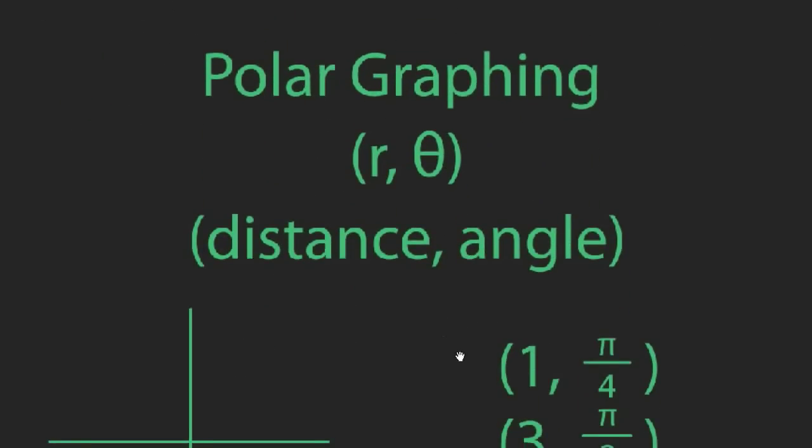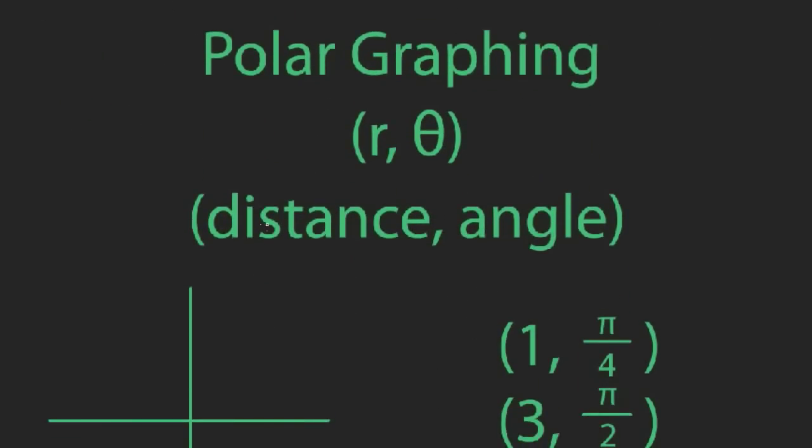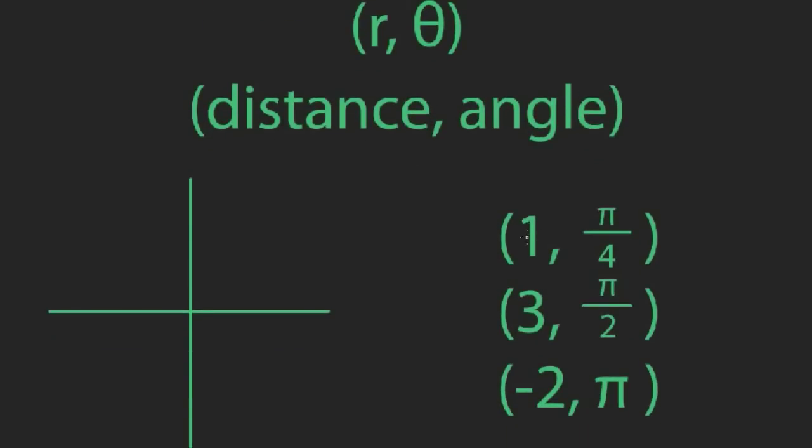Polar graphing is a little bit more radical than parametric graphing. Now we have totally new variables. So now we're going to graph the points with the coordinate system r, θ. What this means: r is your distance from the origin and θ is the angle that you make with the positive x-axis. Let me show you what that means by plotting a few points. (1, π/4): my distance from the origin is one unit and my angle that I make with the positive x-axis is π/4, 45 degrees. So that would describe this point right here.